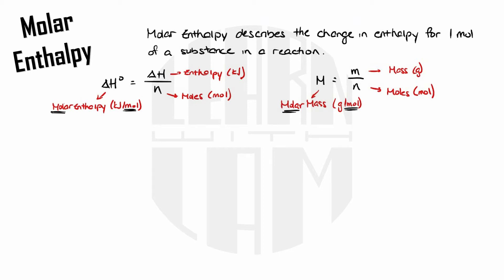Alright quick example here. Say we're dealing with the combustion of methane and we're told that the molar enthalpy of combustion of methane is negative 890 kilojoules per mole. What this means is that when we combust methane we release 890 kilojoules for each mole of methane. Similarly let's look at carbon. The molar mass of carbon is 12.01 grams per mole so when we're looking at carbon there's 12.01 grams for each mole of carbon.